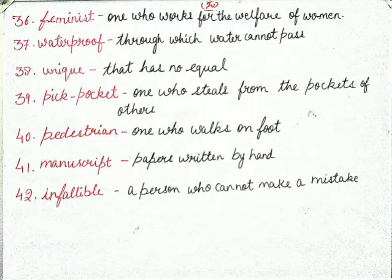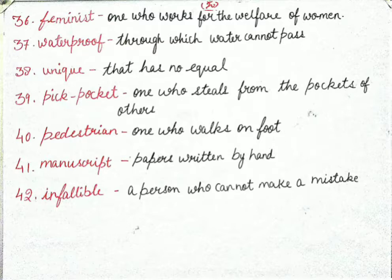Next is 'waterproof' — something through which water cannot pass. Next is 'unique' — that which has no equal. Jiske jaisa kuch na ho use unique kehte hain — that single piece with nothing else like it. Next is 'pickpocket' — one who steals from the pockets of others.